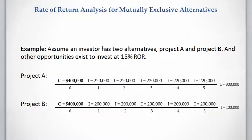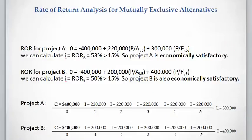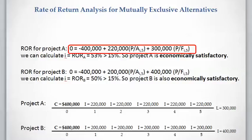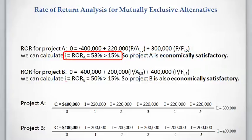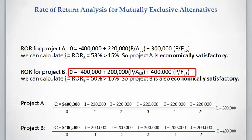Let's calculate the rate of return for these projects. First, we evaluate each project individually, then compare the projects that are economically satisfactory and choose the best one. We write the equation for rate of return: present value of cost equals present value of income plus salvage. We calculate rate of return for project A as 53%, which is higher than the 15% minimum rate of return. So project A is economically satisfactory.